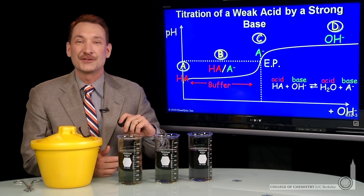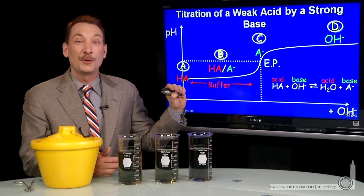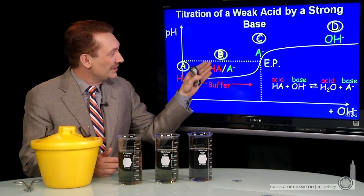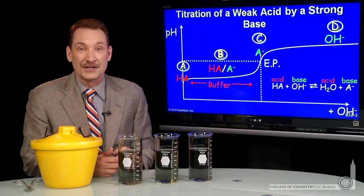In the titration of a weak acid by a strong base, there's a region where the pH changes slowly as you add the base. That's called the buffer region. It's the region where the acid and conjugate base are about equal concentrations.